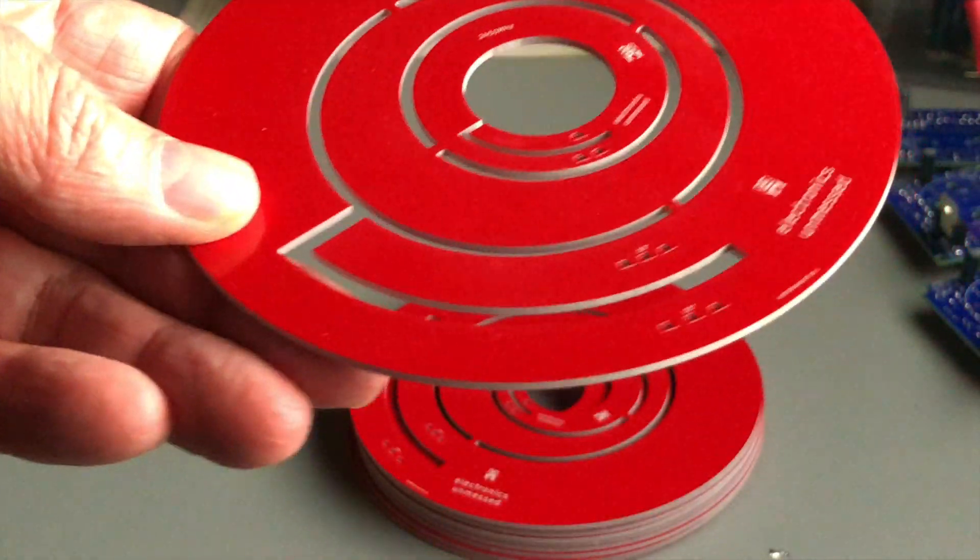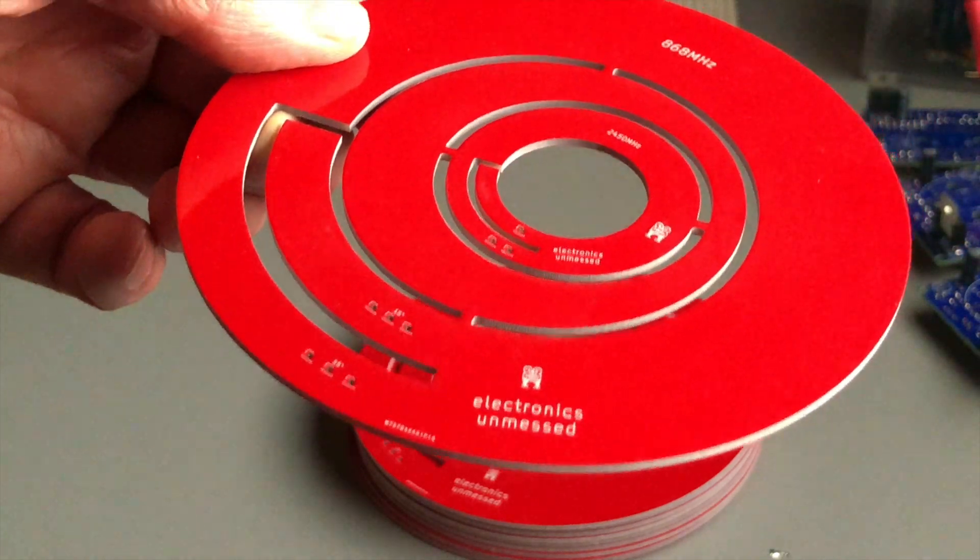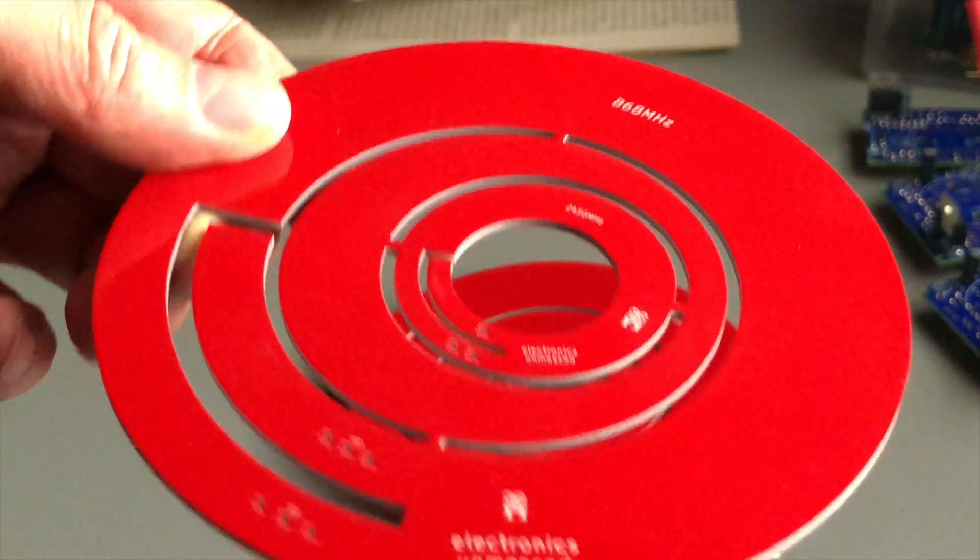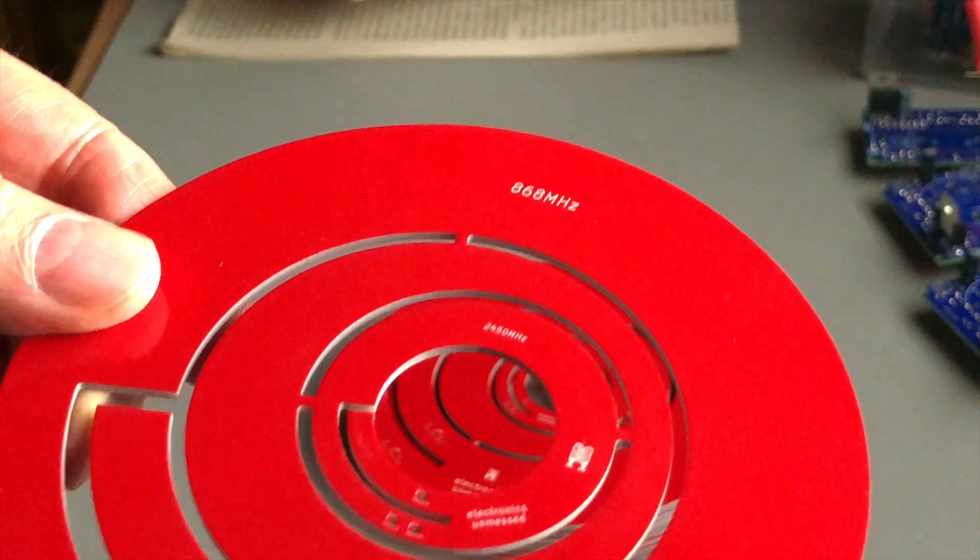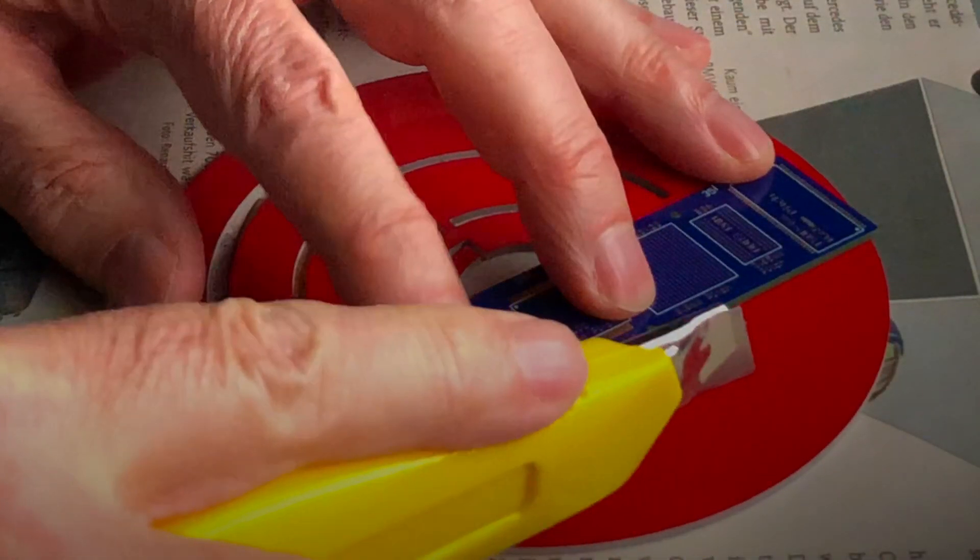The PCB's precision is impressive, and the stability of the 1.5 mm substrate is absolutely sufficient for our loop antennas.